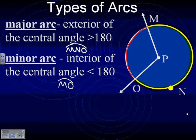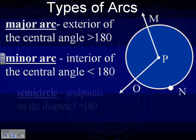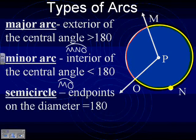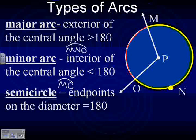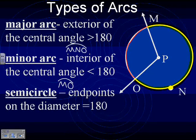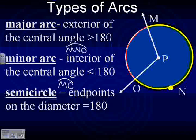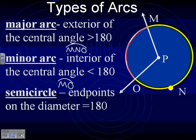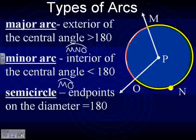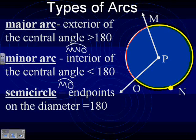And then we've got one more special type. It's called a semicircle. I think somebody threw this term out there earlier. The semicircle is pretty specific. The endpoints need to be on a diameter, and it's equal to exactly 180. So what portion of a circle is a semicircle? Exactly half.